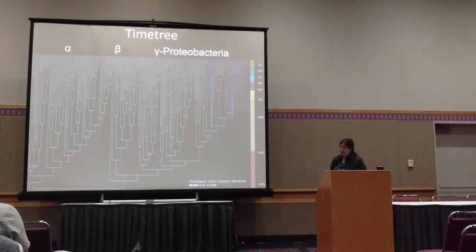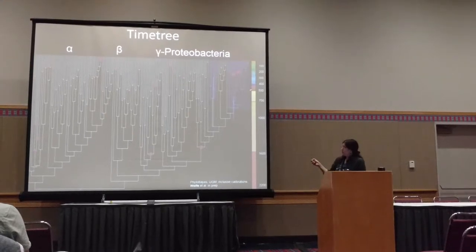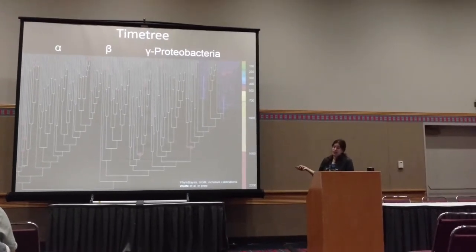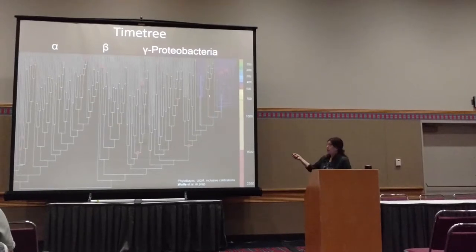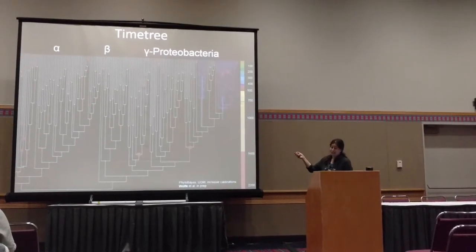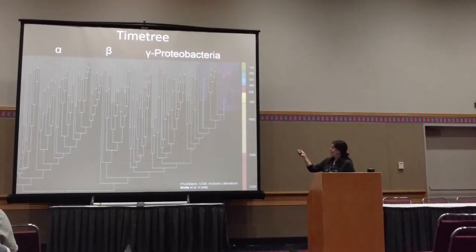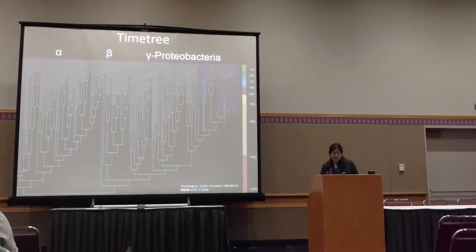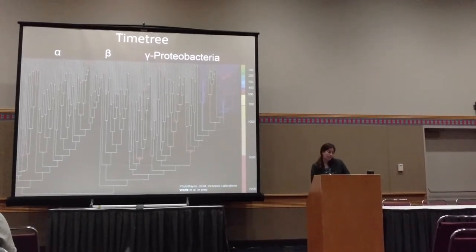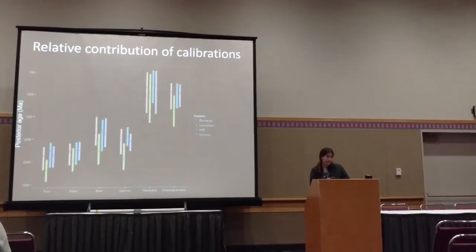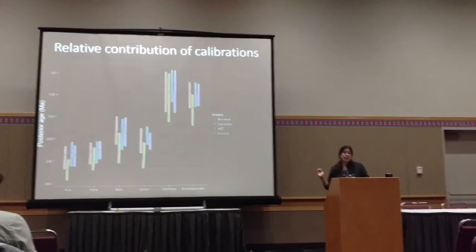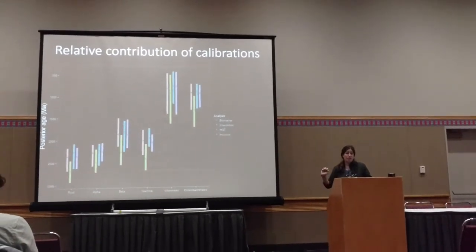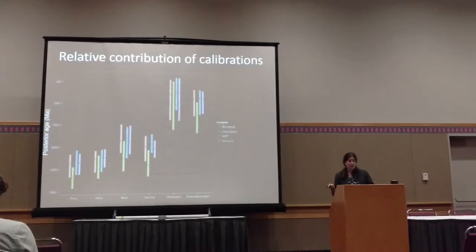Two of the clades most prevalent within gut microbiota are Enterobacteriales and Vibrionales. Keep in mind what the timing shown here means, because I'm going to come back to what that means for co-evolution. The relative contribution of the calibrations is actually most strongly driven by the co-evolutionary ones that we included.